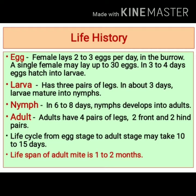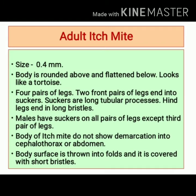The lifespan of an adult mite is 1 to 2 months. The adult mite measures 0.4 mm in size. Its body is rounded above and flattened below, so it appears like that of a tortoise. The two front pairs of legs end in suckers, which are long tubular processes, and the hind legs end in long bristles. The male has suckers on all legs except the third pair, which helps distinguish it from the female mite. The body surface shows no demarcation into cephalothorax or abdomen, and is thrown into folds covered with short bristles.